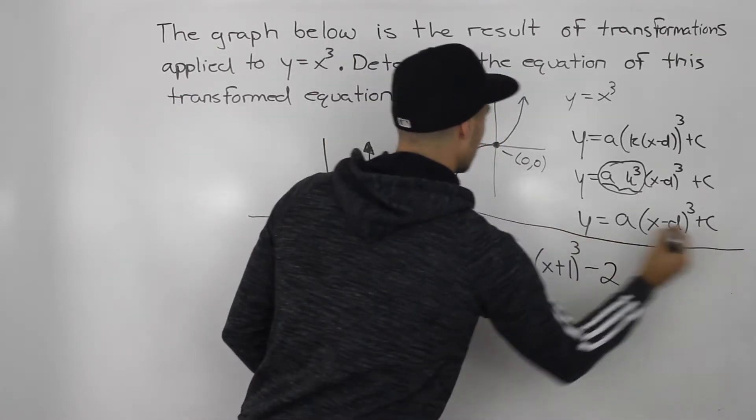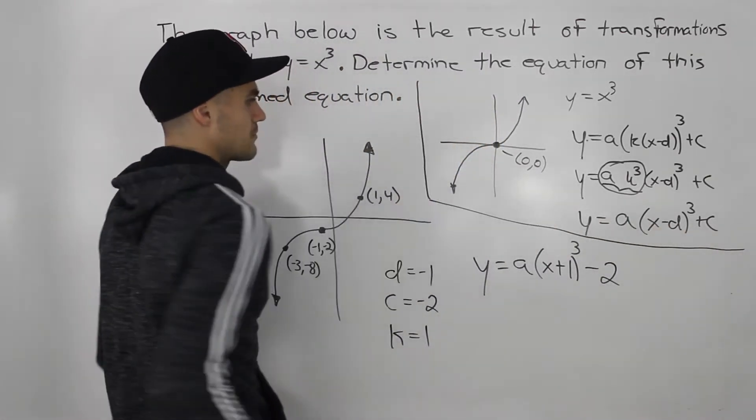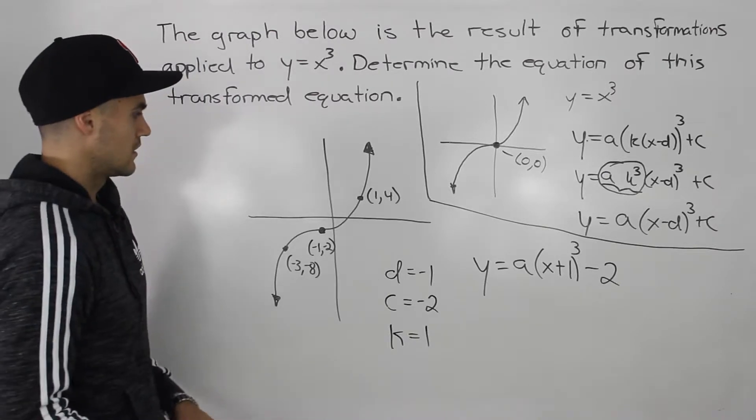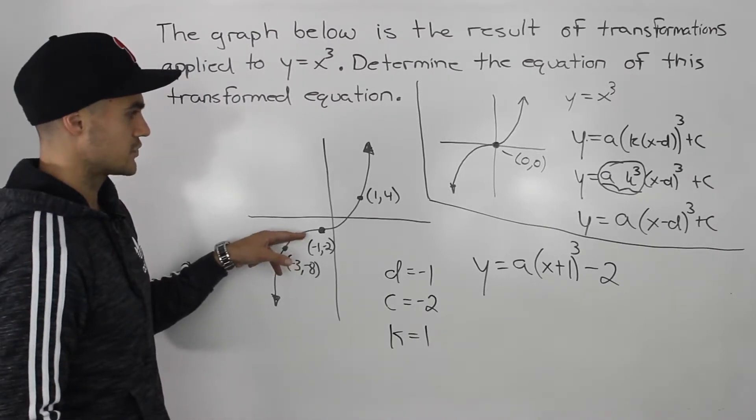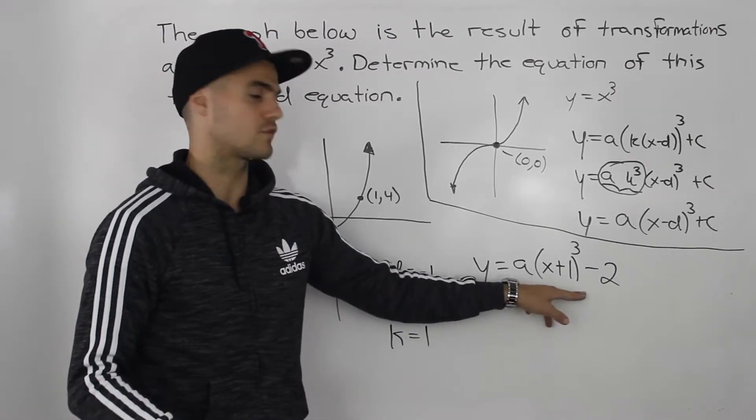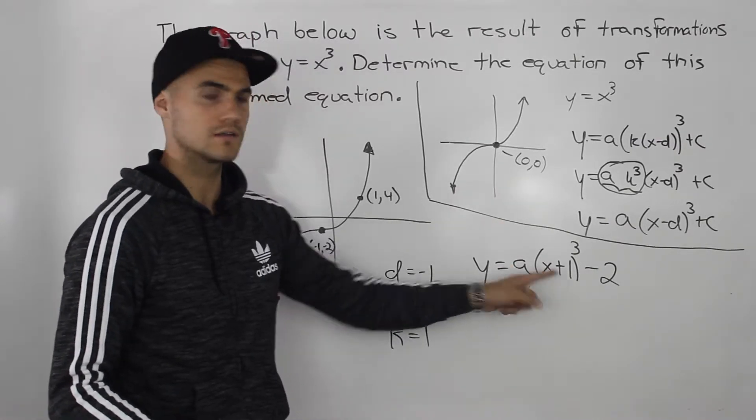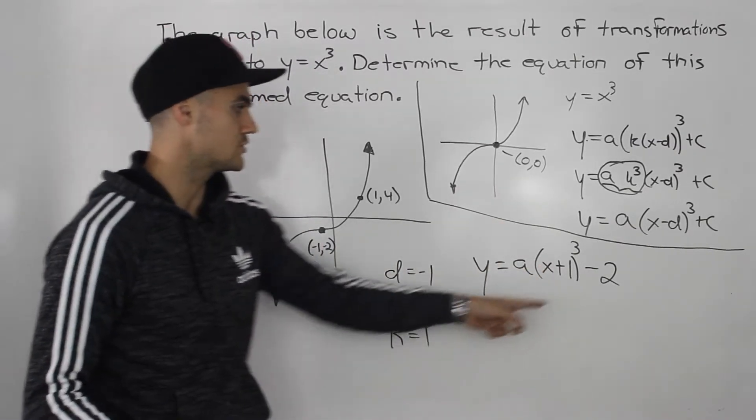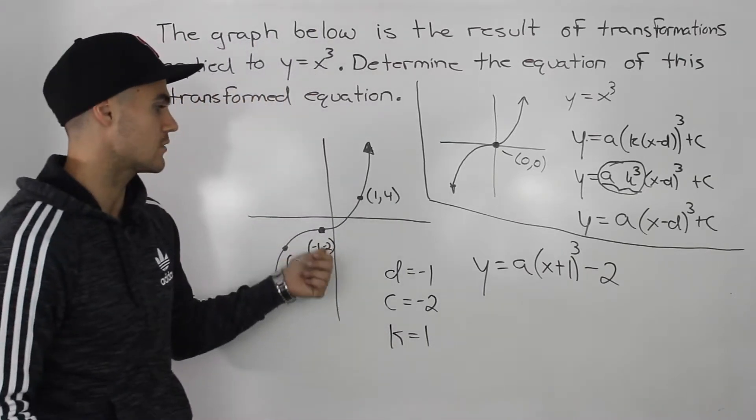So let me put like a little border here just to separate this stuff. All right, so this function takes this form so far. So we basically took x cubed, shifted it 1 to the left, and then 2 units down, and we got that from the saddle point.